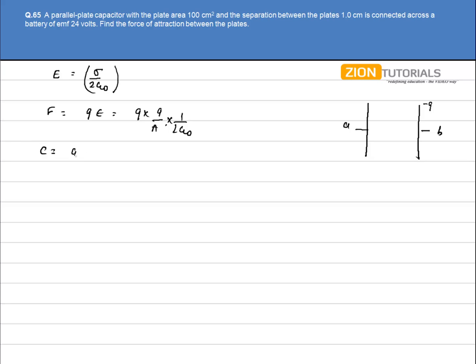Capacitance can be written as epsilon not A by d, that is 8.85 × 10⁻¹² into area of cross section that is 100 × 10⁻⁴ meter square by 1 cm that is 0.01 meter. This is my capacitance.